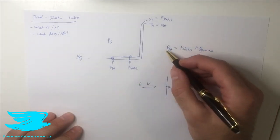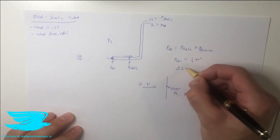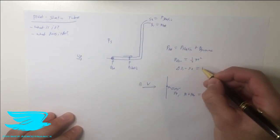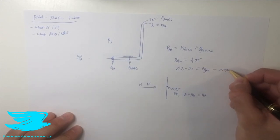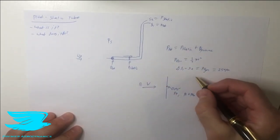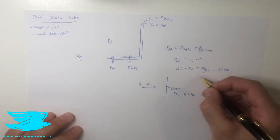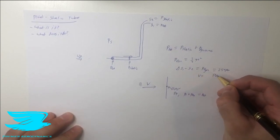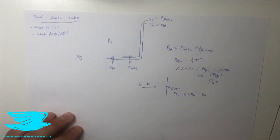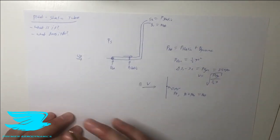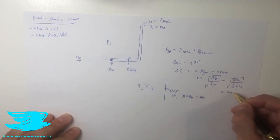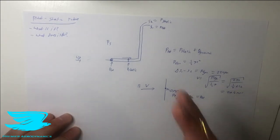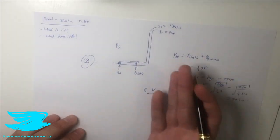Let's give an example. The difference between the pressures at sensor one and sensor two equals the dynamic pressure. Let's say we measure a difference of 250 pascals. To find the velocity, we use: velocity equals the square root of dynamic pressure divided by half times the density. With a density of 1.2 kilograms per meter cubed, that gives us the square root of 250 divided by 0.6, which equals 20.4 meters per second. That's how powerful this simple process is.